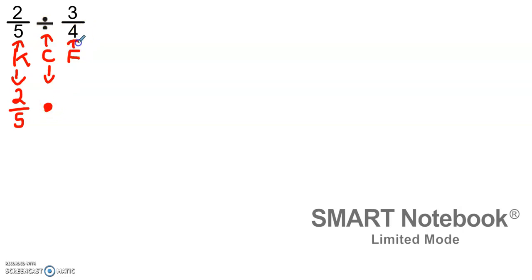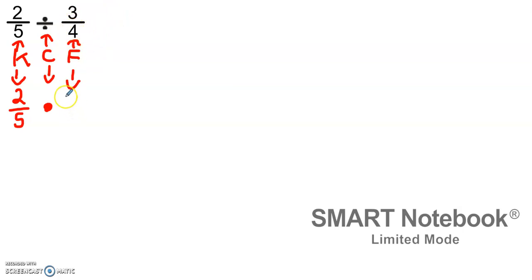So since our denominator here is four, it is now our numerator. And since three is our numerator, that is now our denominator. So now we've done step two.